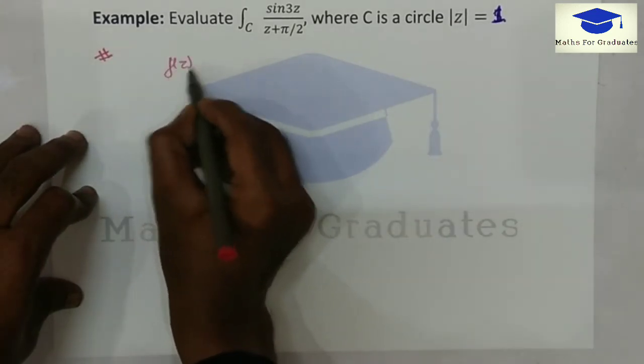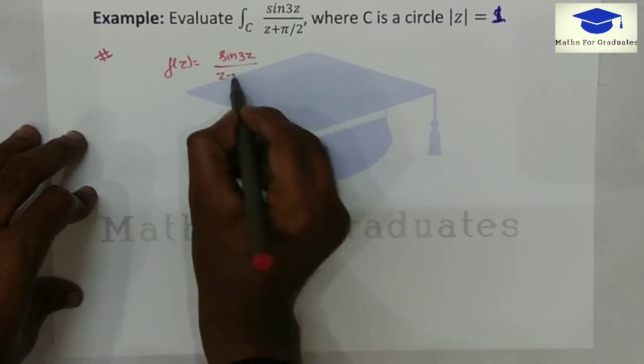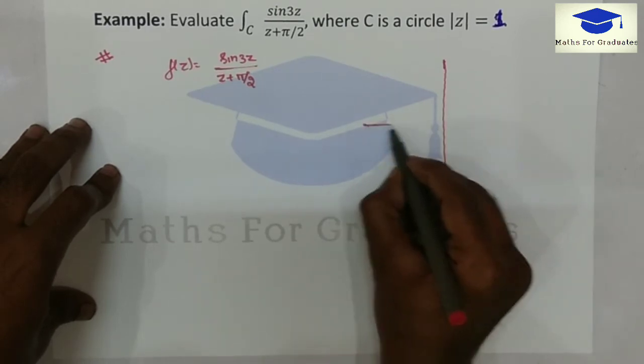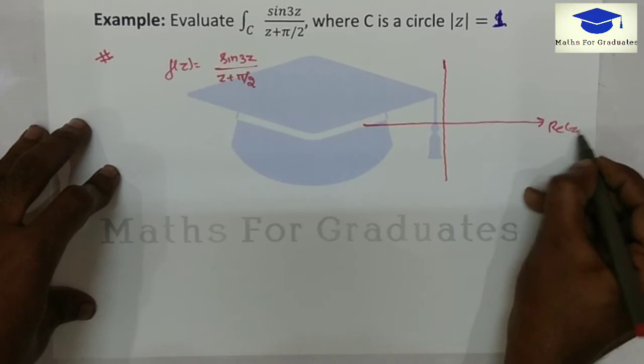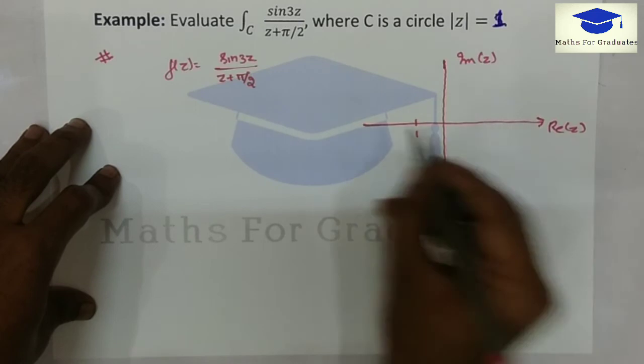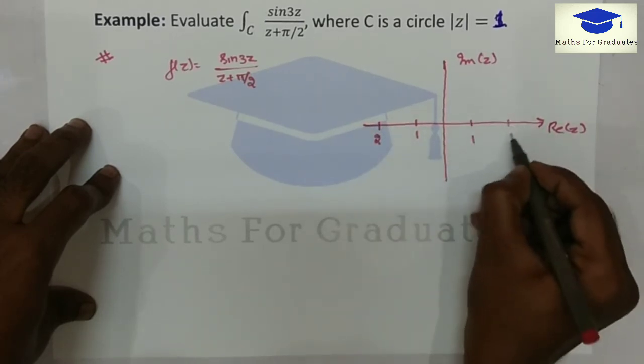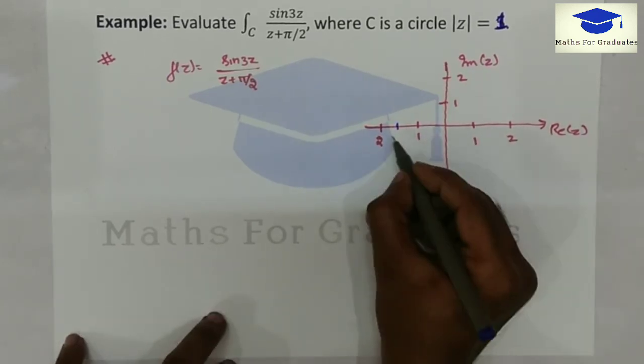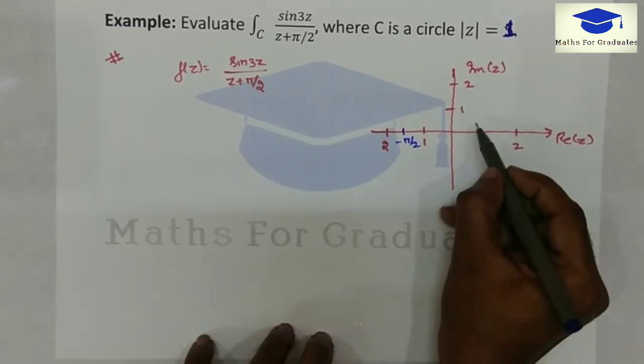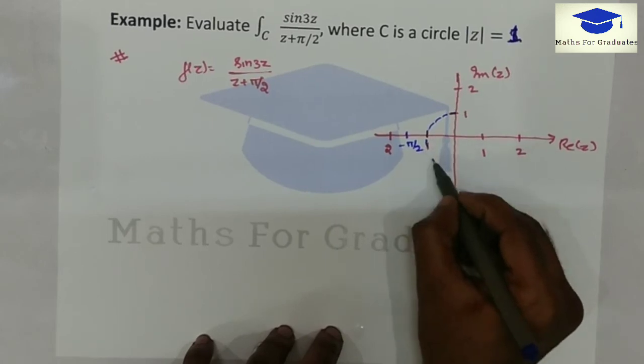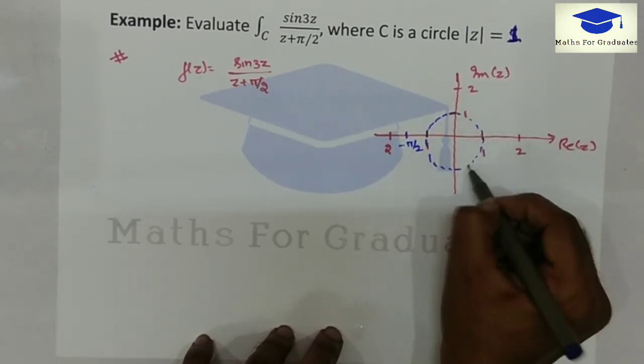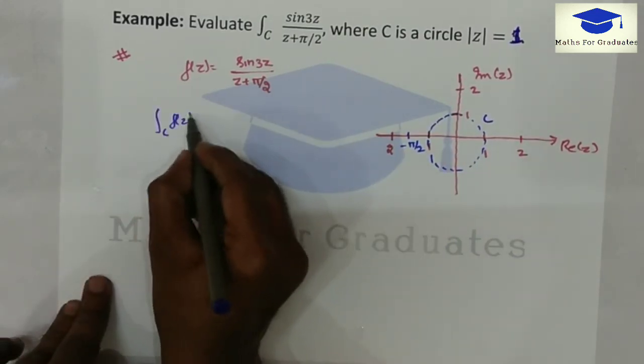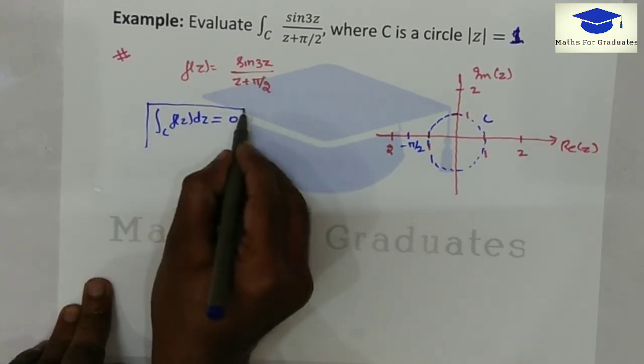The given function f of z is sin 3z over z plus pi by 2. The given function f of z is analytic everywhere except point minus pi by 2. Minus pi by 2 lies between 1 and 2, and the contour is circle of radius 1. Therefore, the given function is analytic in the given contour c. Hence, the integration of this f of z will be 0.